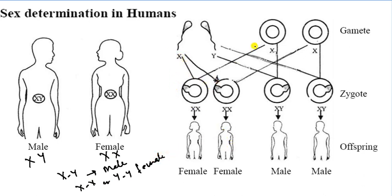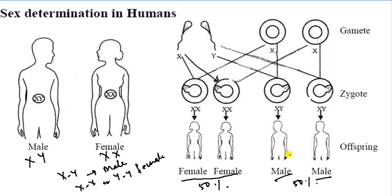Here, when X and X combine, we get XX — female. When Y and X combine, we get XY — male. There are four cases but each type has two cases, meaning it is 50%. The chance is 50% for female and 50% for male in the next generation. In the next generation, there is a 50% chance of boys and 50% chance of girls.